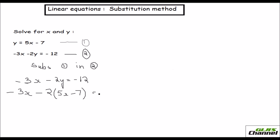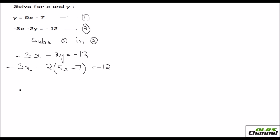Write the rest as it is — wherever you find y, replace it with the first equation. Now let's expand and solve for x. This is minus 3x. Use the distributive property and multiply negative 2 with this — that gives minus 10x, then multiply negative 2 with the second term in the parentheses, giving plus 14. Equals minus 12.